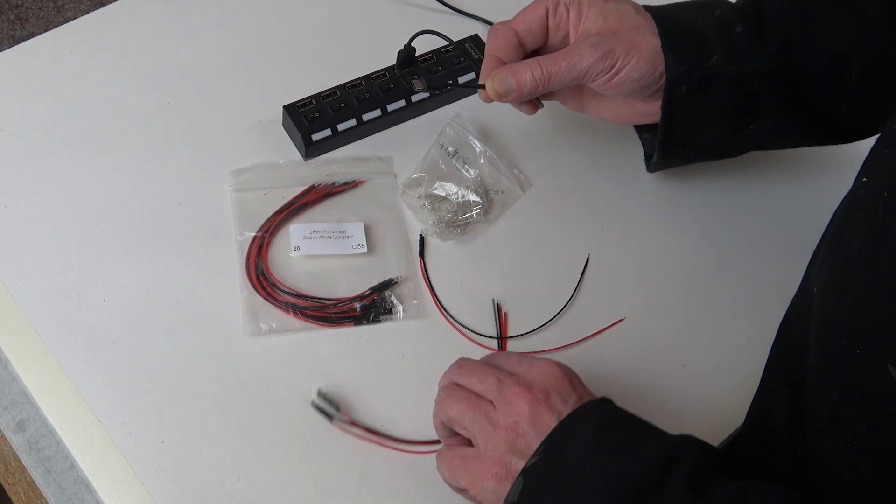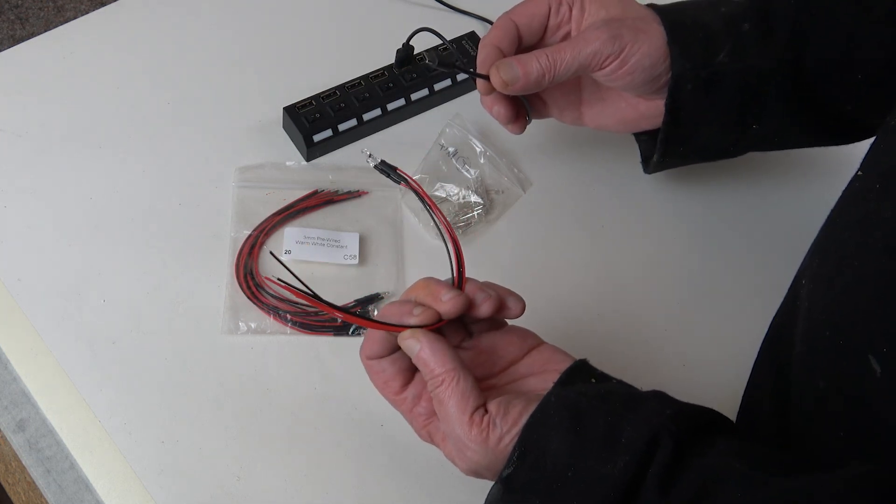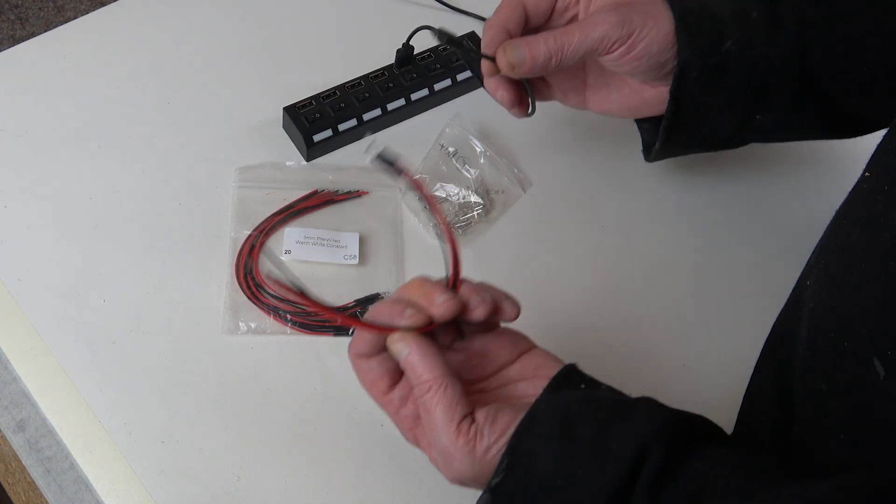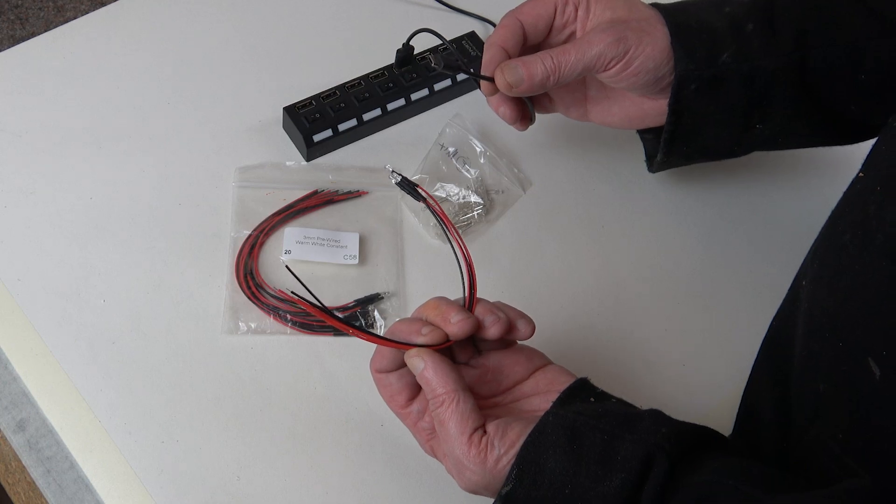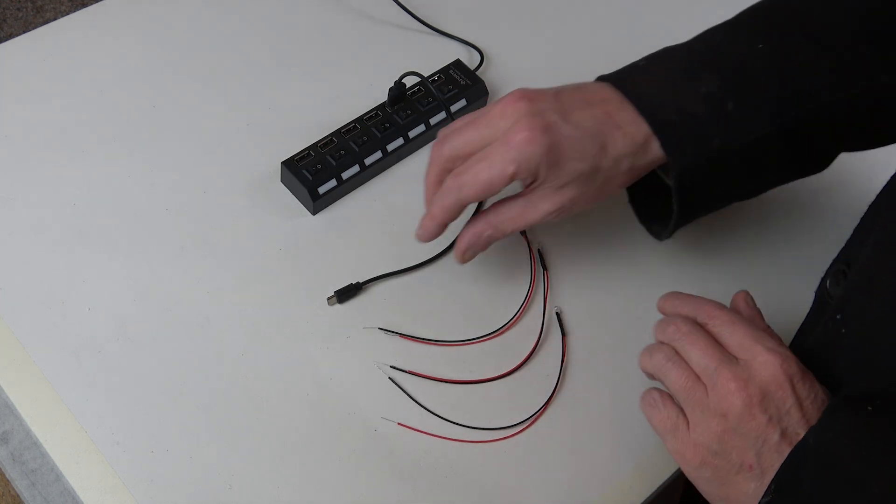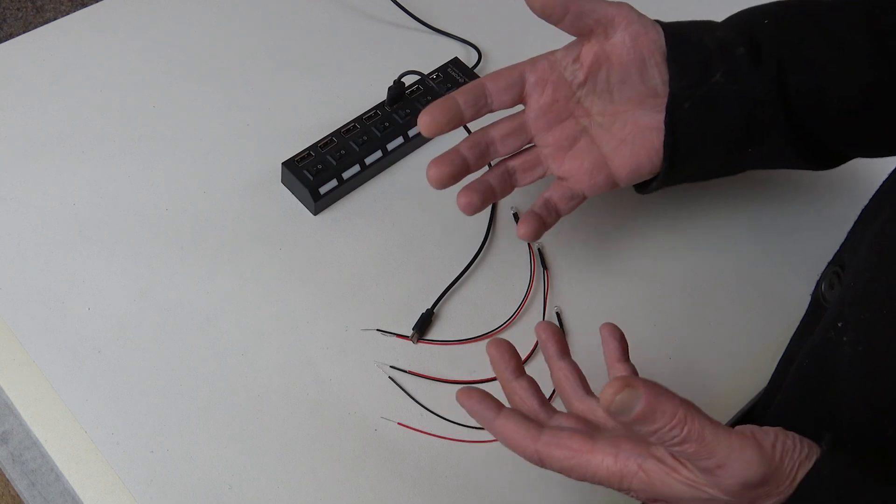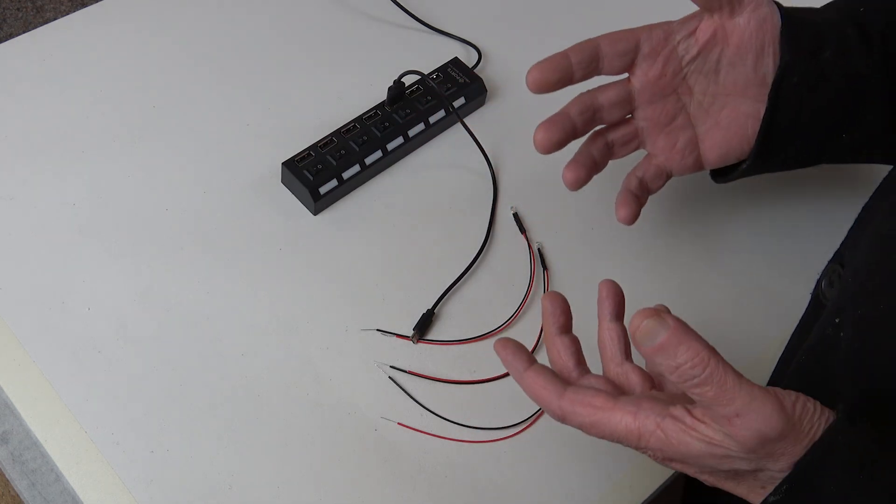So as promised, here we have three LEDs and a USB wire. We need to join them all together so you can wire all the LEDs up and switch them on and off.